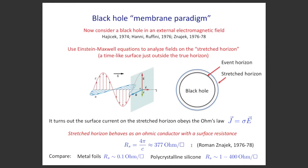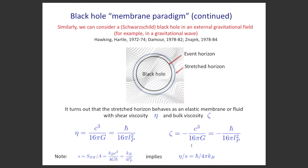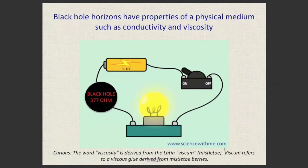Going further: place a black hole in an external gravitational wave. The gravitational wave distorts the medium, creating strains and stresses, allowing measurement of viscosity. People computed the shear and bulk viscosity of black holes, both proportional to ℏ. Dividing shear viscosity by entropy density gives a ratio of 1/(4π) in Planck units. So black holes have the properties of a physical medium: conductivity and viscosity.